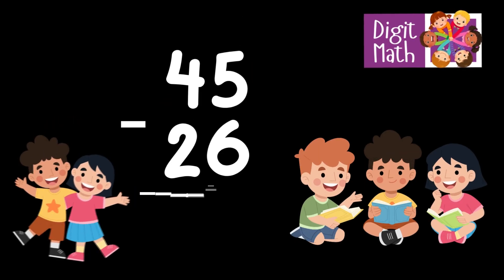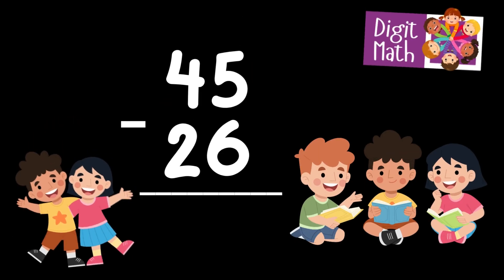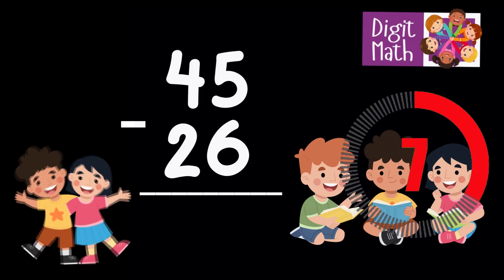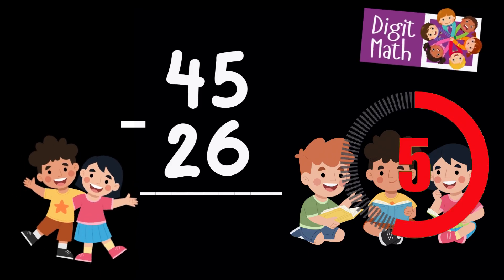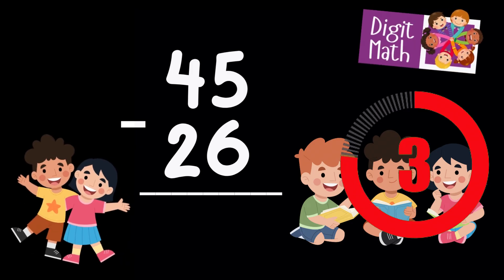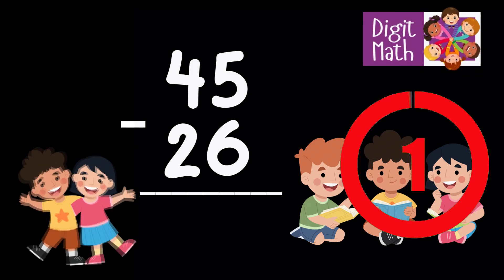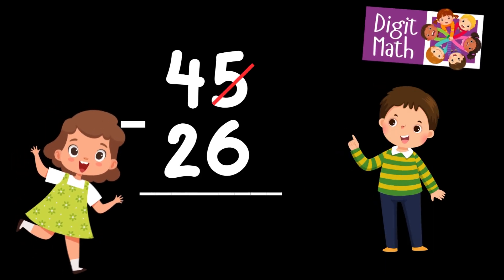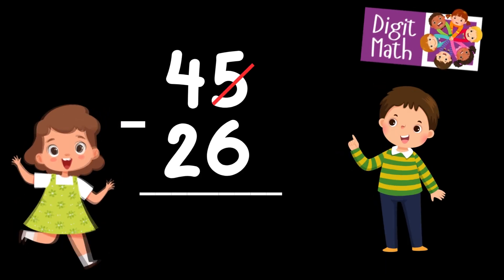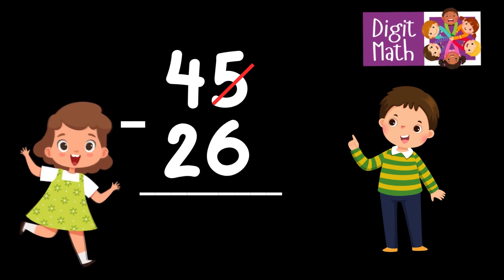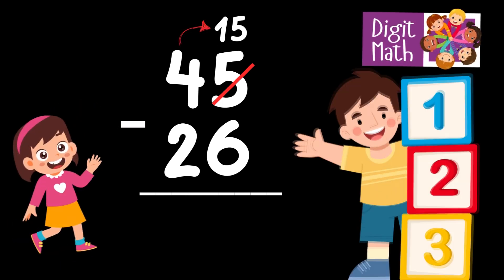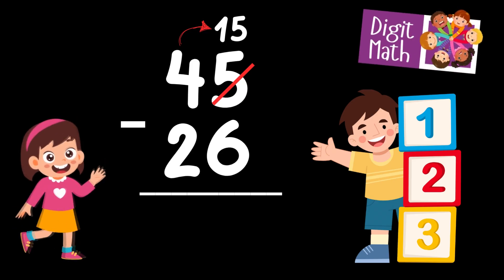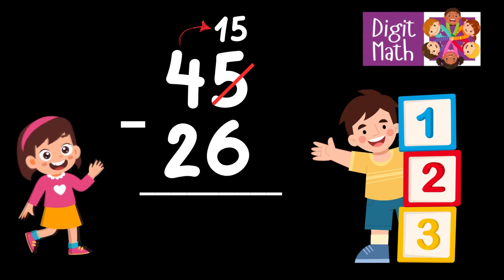45 minus 26 is... Time to think. In the Units column, we have 5 minus 6. Since 5 is less than 6, we need to borrow from the Tens column. In the Tens column, we have 4. Borrowing 1 from 4 leaves 3 in the Tens column and turns the Units column into 15.